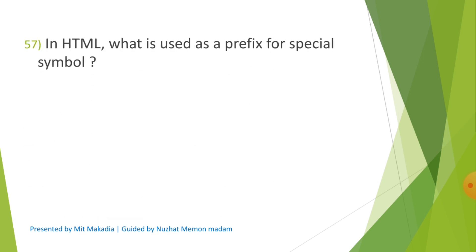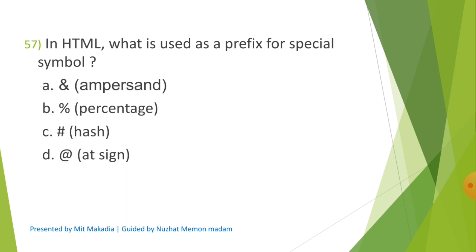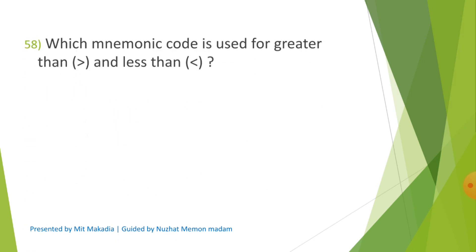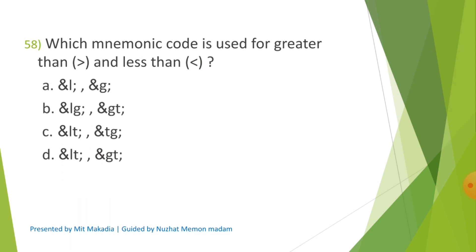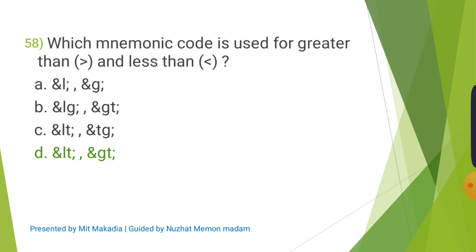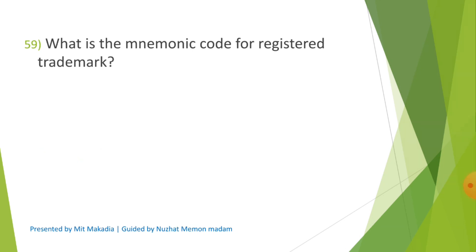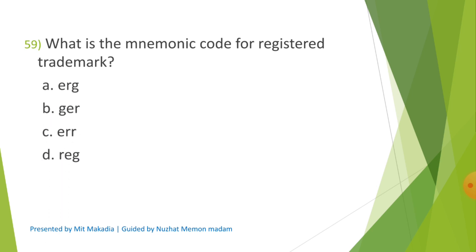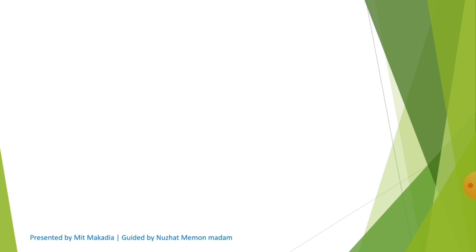Question 57: In HTML, what is used as a prefix for a special symbol? Options are A) Ampersand, B) Percent, C) Hash, D) H sign. The correct answer is A) Ampersand. Question 58: Which mnemonic code is used for greater than and less than? Options are A) L and G, B) LG and GT, C) LT and TG, D) LT and GT. The correct answer is D) LT and GT. Question 59: What is the mnemonic code for registered trademark? Options are A) ERG, B) GER, C) ERR, D) REG. The correct answer is D) REG.